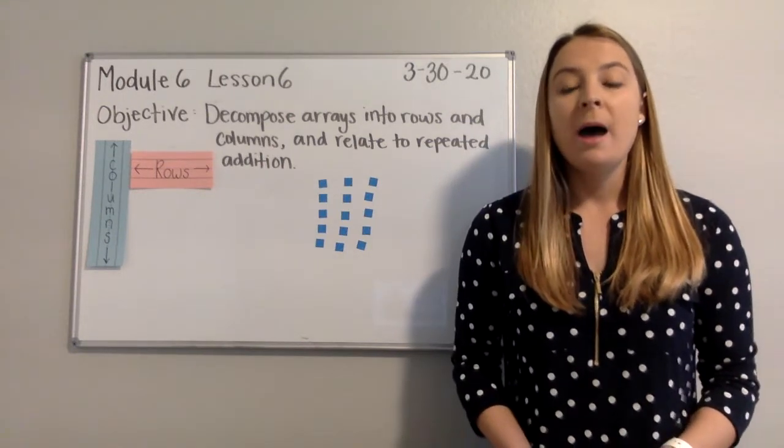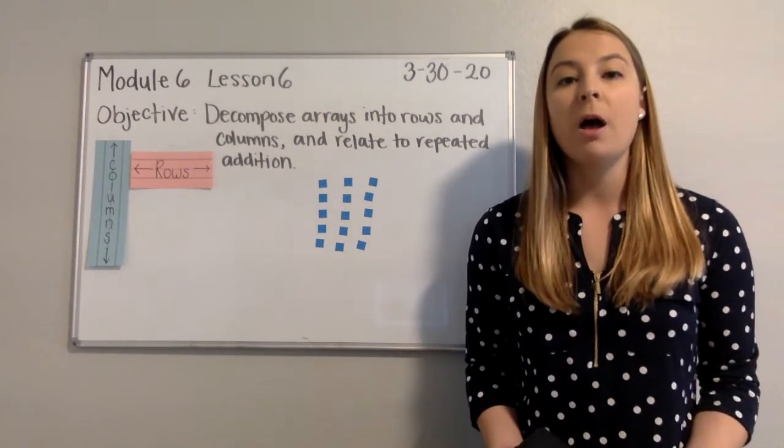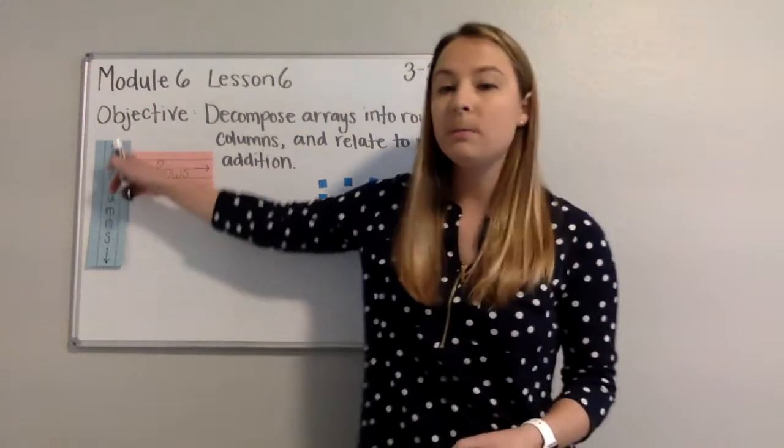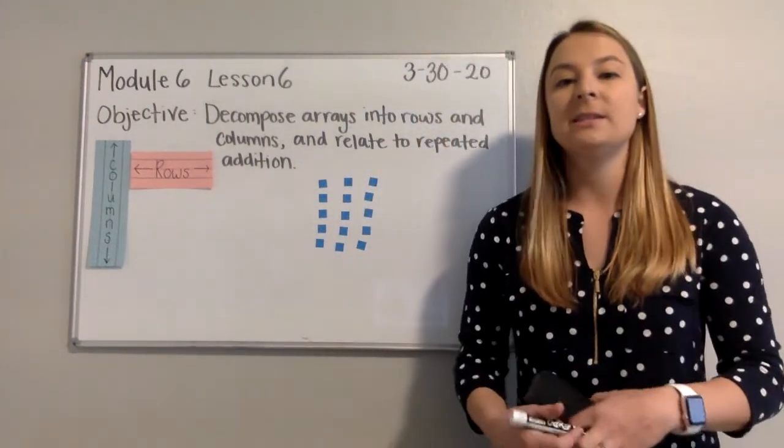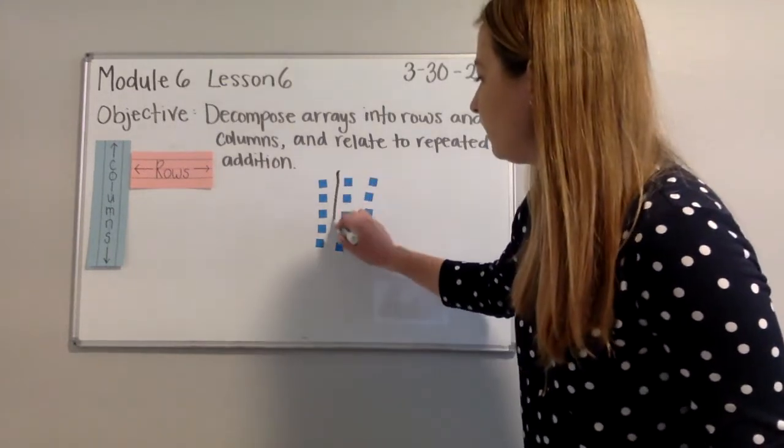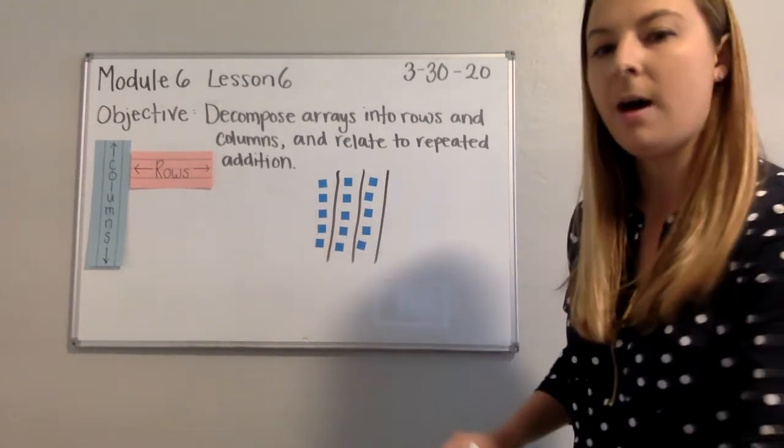I'm going to separate my columns or decompose my array into columns by drawing a line in between each of the columns. Now remember, columns move up and down. So I'm going to be drawing vertical lines to separate my columns. Here's my first column. My second column. And my third column.